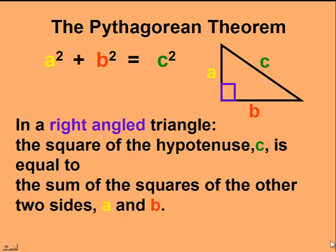The other two sides, A and B, are sometimes referred to as legs of a right-angle triangle. The Pythagorean Theorem states, in a right-angle triangle, the square of the hypotenuse is equal to the sum of the squares of the other two sides. In math terms, A squared plus B squared equals C squared.